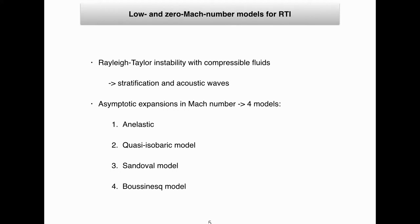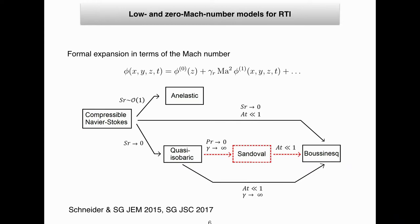There are several models to describe this flow in the incompressible limit. We have derived four models: the anelastic quasi-isobaric model, the so-called Sandoval model derived by Sandoval in 1995, and the Boussinesq model for RT flows. To derive these models, we use a formal asymptotic expansion in terms of Mach number. We choose a formal Mach number of the flow, perform the expansion, introduce it into the full Navier-Stokes equation, and then by taking limits of the dimensionless parameters, we get several models.